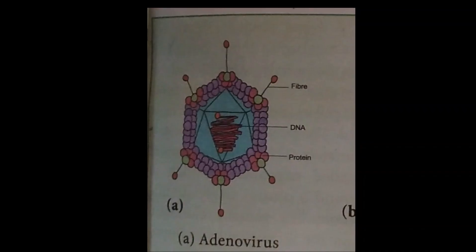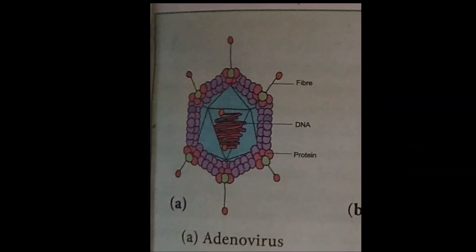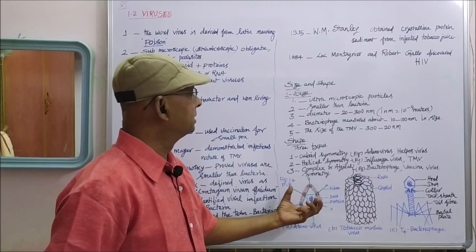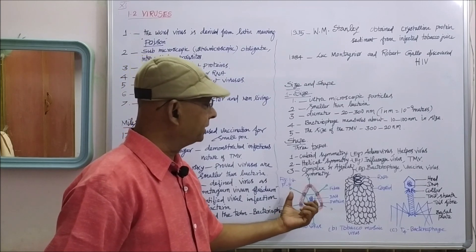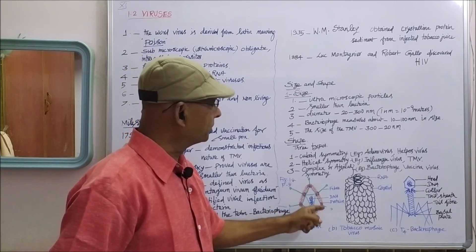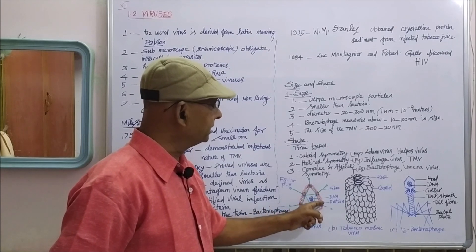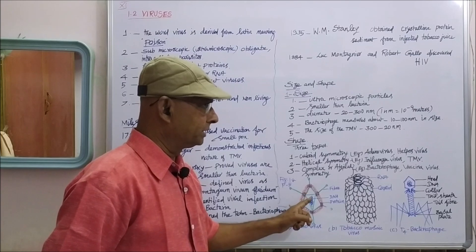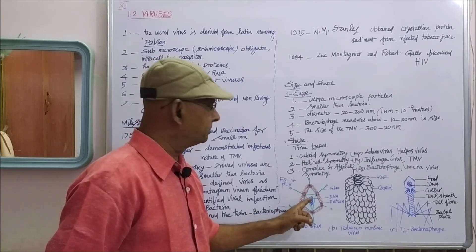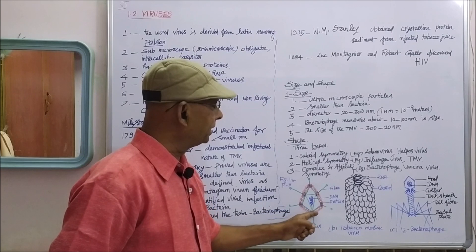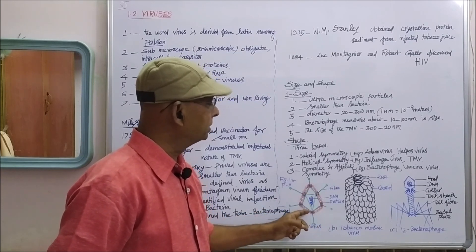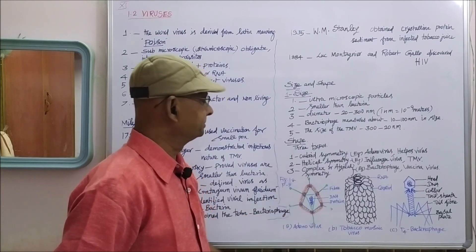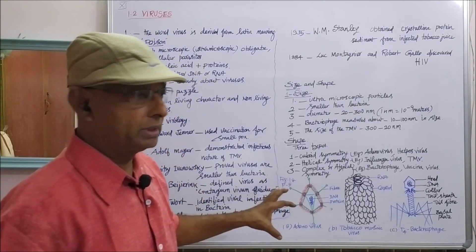Adenovirus has a cuboidal structure with a protein coat enclosing DNA as the nucleic acid. Centrally, DNA is present as the nucleic acid, surrounded by a protective protein coat, with fibers projected outward. That is the simple structure of adenovirus.